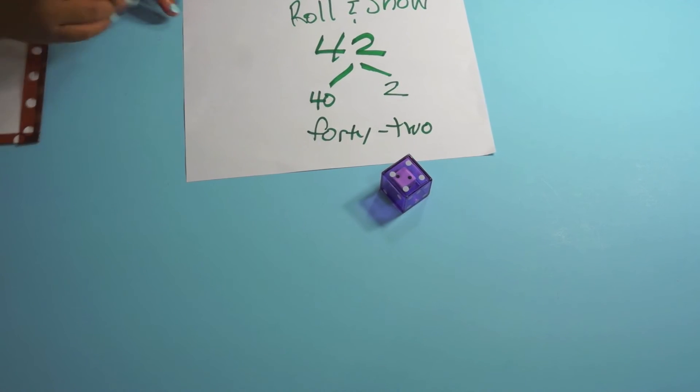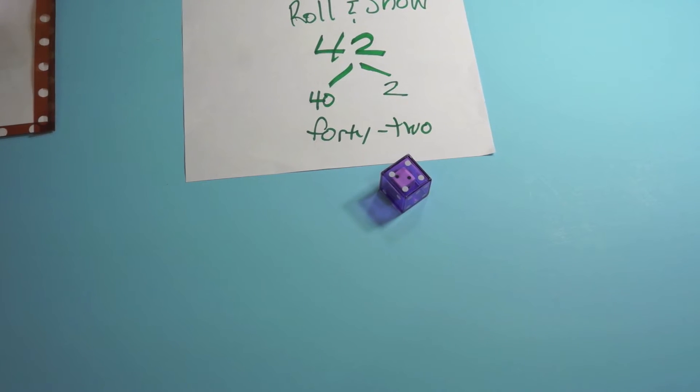Sometimes I make kids write the word because number writing, number words is part of place value. But using this, this is a simple center that can keep kids practicing. Remember, centers should be purposeful practice. So writing out, rolling and showing it using the double dice. Or you could use just two regular dice and say use a green one and a red one and say the reds are the tens and the green is the ones or vice versa.